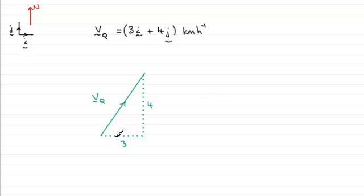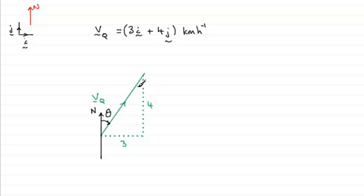When it comes to the bearing that ship Q is going on, if we insert a north line here, the bearing is this angle. Remember, bearings turn in a clockwise sense from north, so it's this angle theta that we're after. I could work out another angle and take it away from 90 degrees, or alternatively note that this angle up here is also theta — these are alternate angles. So we have a right-angle triangle.